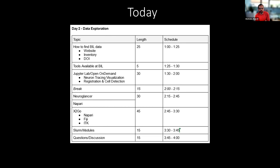Today, I'd like to continue the workshop to discuss not so much data submission to BIL, but how, once your data is here or if you want to take advantage of data we already have available at the Brain Image Library, how you can do that. So this is a data exploration session on Day 2. We'll talk about our website, how to find information in the inventory and the DOI landing pages, the tools available, then we'll move on to Jupyter Labs demos, take a short break, then discuss the visualization ecosystem and high performance computing infrastructure using SLURM and modules.